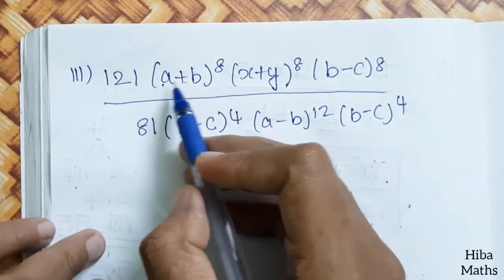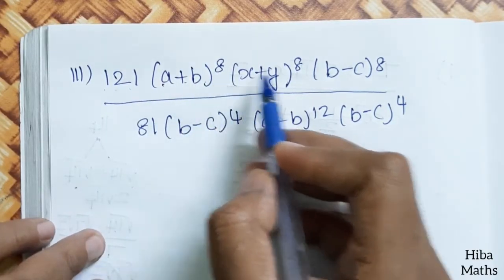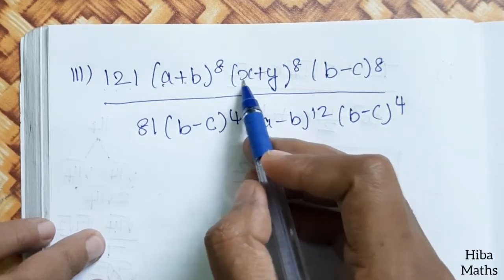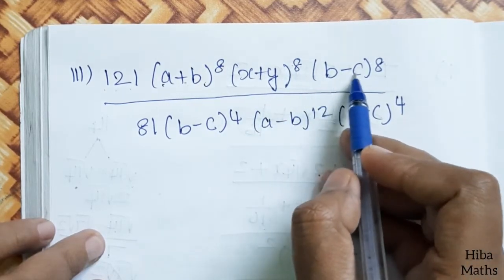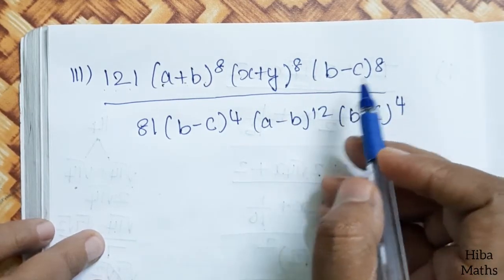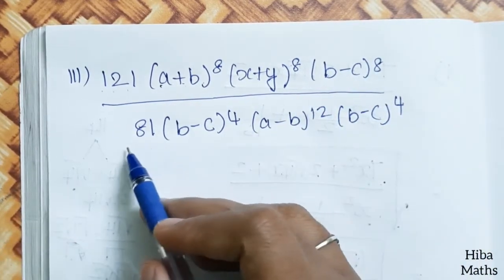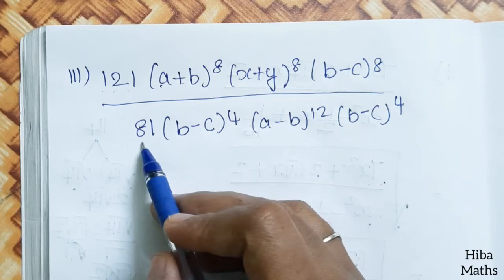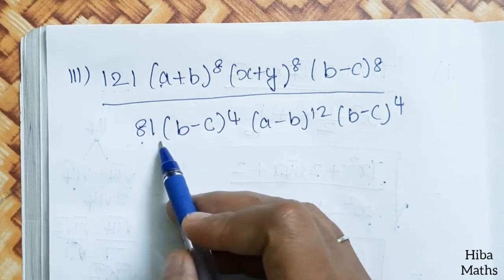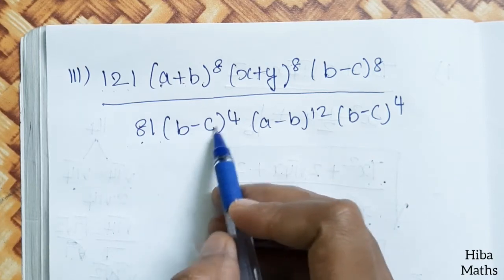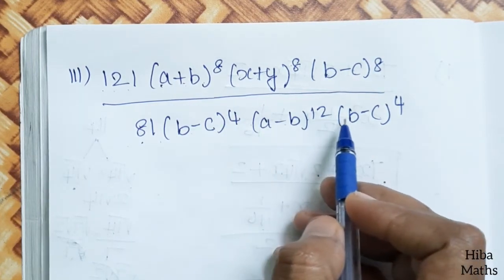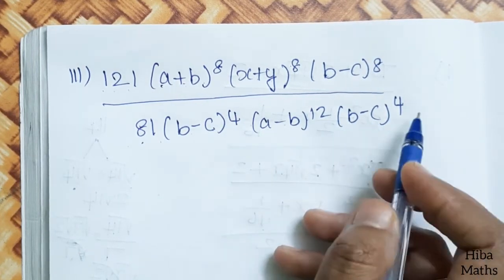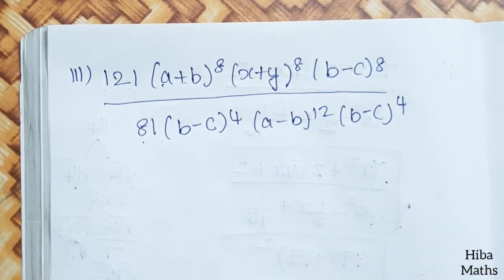Question 3: find the square root of 121 times (a+b) whole power 8 times (x+y) whole power 8 times (b-c) whole power 8, divided by 81 times (b-c) whole power 4 times (a-b) whole power 12 times (b-c) whole power 4.